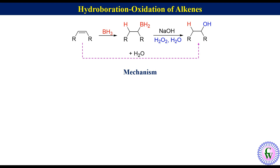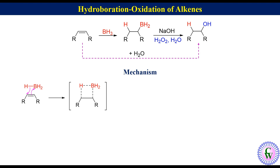Mechanism: the alkene is electron rich due to the presence of the pi bond, while BH3 is electron deficient as boron has an incomplete octet. Transfer of pi electrons to boron and at the same time transfer of a hydride ion to the alkenic carbon leads to the formation of a four-membered cyclic transition state, in which there is a partial positive charge on boron and one carbon, while partial negative charge on hydrogen and the other carbon. This transition state then collapses to the alkylboron.